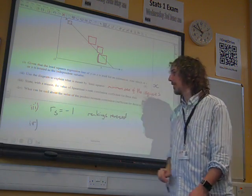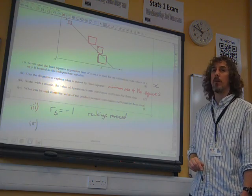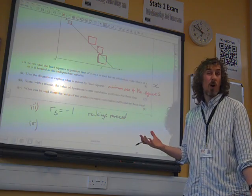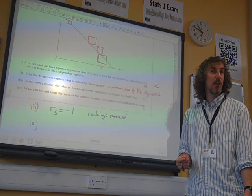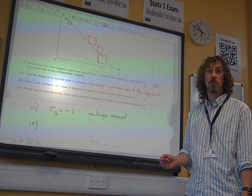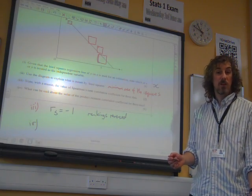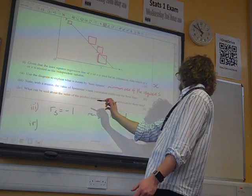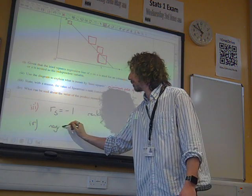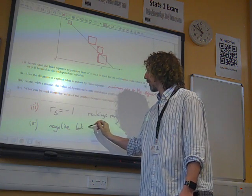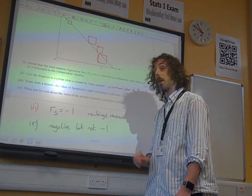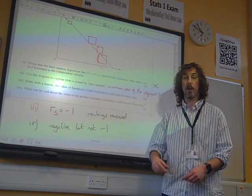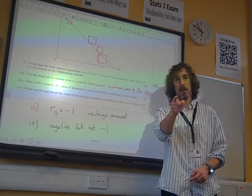And part 4. What can be said about the value of the product-moment correlation coefficient for this data? Well, it's not a linear arrangement, is it? It would be negative. It wouldn't be minus 1. So it would be... Yeah. I mean, that's about all that we can say, isn't it? It would be negative. But it's not minus 1. We can't really say any more than that. It might be minus 0.5, but we can't really take a step of that. And that's math. Thank you.